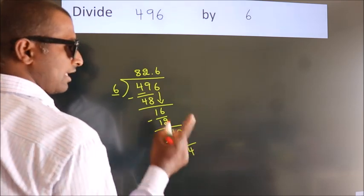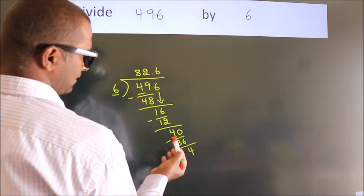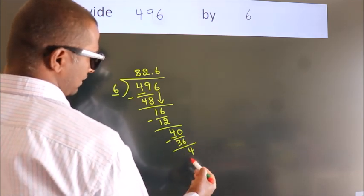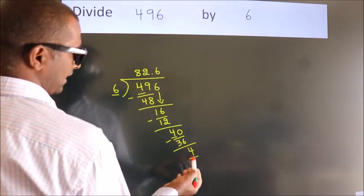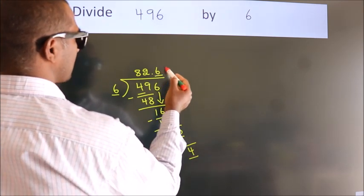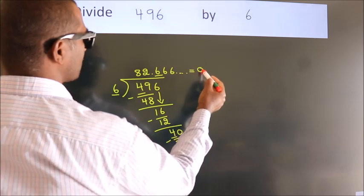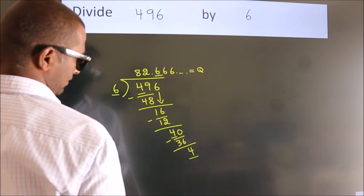Now you observe we had 4 here and we got 4 again. That means this number keeps on repeating. So this is our quotient.